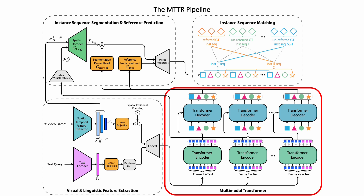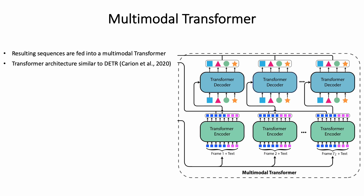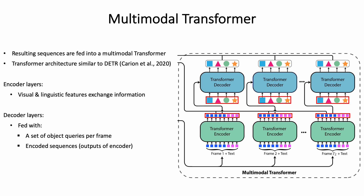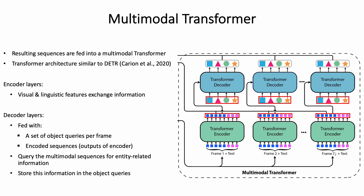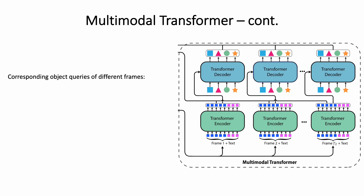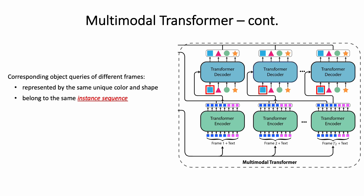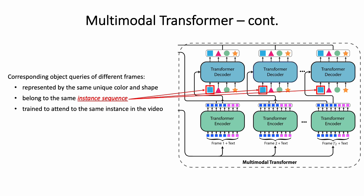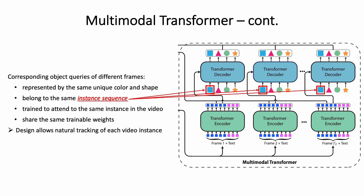In the second step, the resulting sequences are fed into a multimodal transformer. The transformer architecture we employ is similar to the one originally proposed in DETR for object detection purposes. In the encoder layers, the textual embeddings exchange information with the visual features of each frame. Then, the decoder layers, which are fed with the outputs of the encoder and a set of object queries per input frame, query the multimodal sequences for entity-related information and store it in the object queries. Corresponding object queries of different frames, represented by the same unique color and shape, belong to the same instance sequence, are trained to attend to the same instance in the video, and share the same trainable weights. This design allows for natural tracking of each instance in the video.